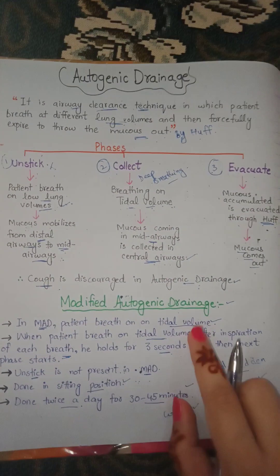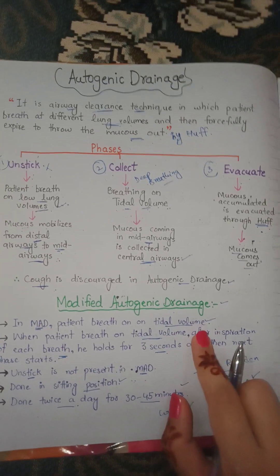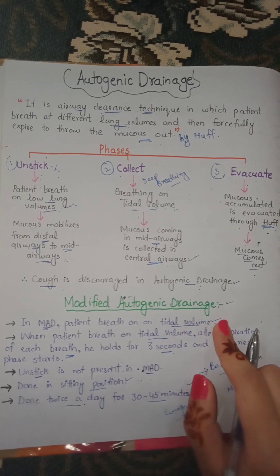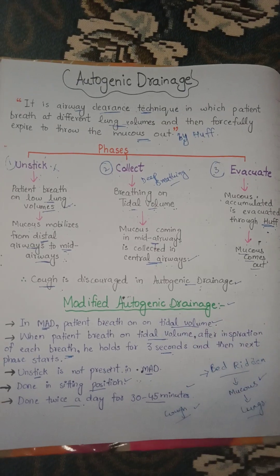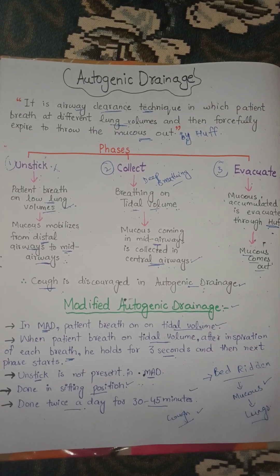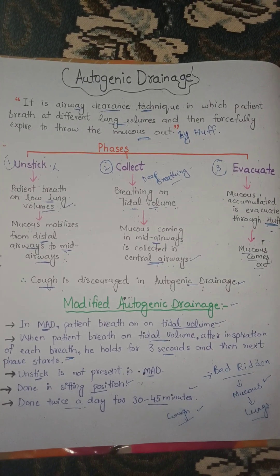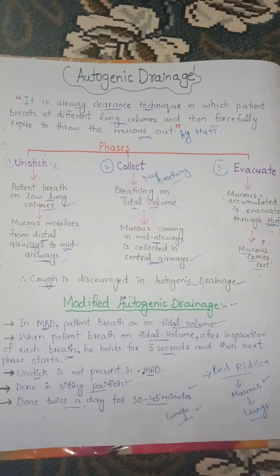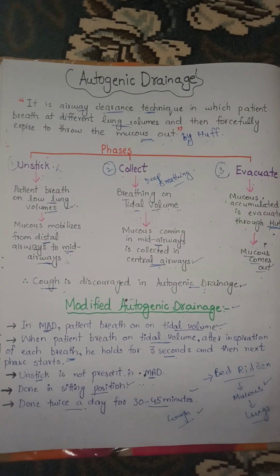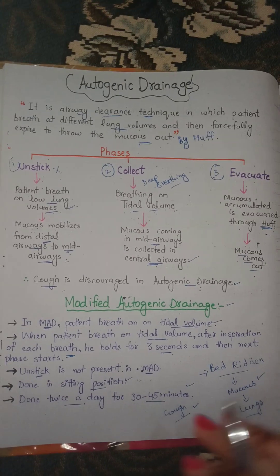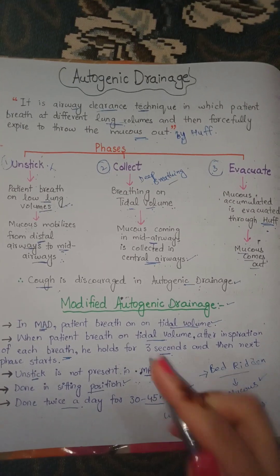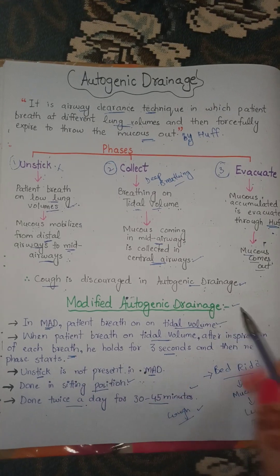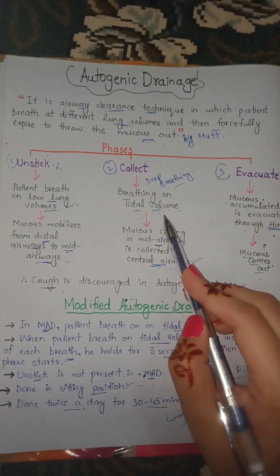The reason for the absence of the unstick phase in modified autogenic drainage is that the unstick phase is very uncomfortable for the patient, as the patient breathes at low lung volumes. That is why the unstick phase is skipped in modified autogenic drainage.